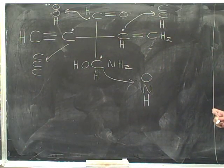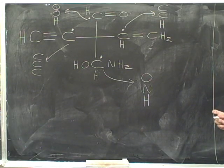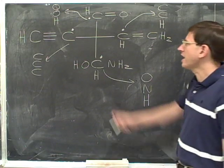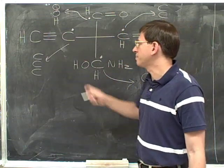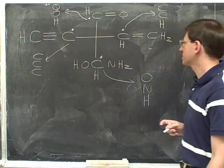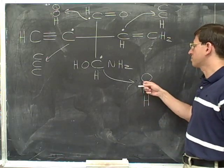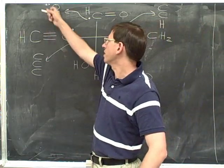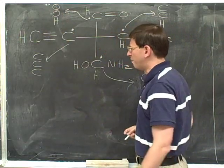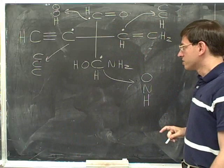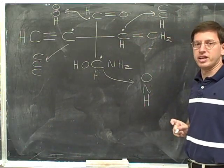Now we have to decide the priorities, and we look for the first point of difference as usual. We can split these into two groups: the top and the bottom substituents are going to beat the left and the right substituents. Their first point of difference is at the first atom — the bottom and top lists both start with an oxygen, but the left-hand and right-hand lists both start with a carbon. So the top and the bottom are going to be number one and number two.